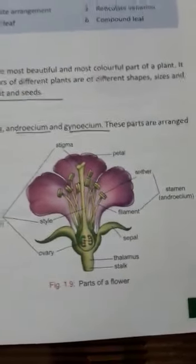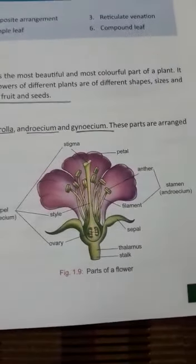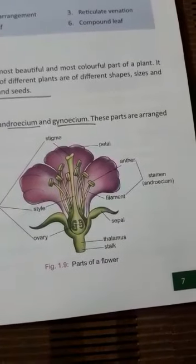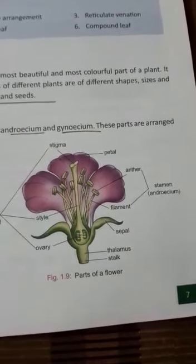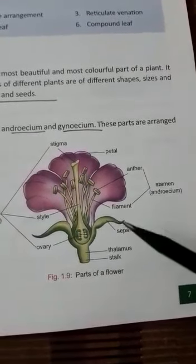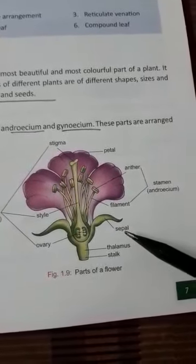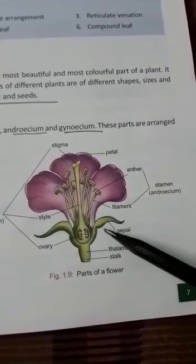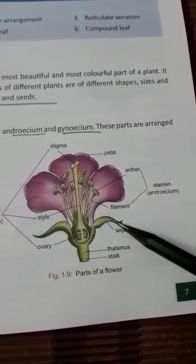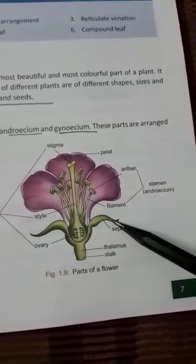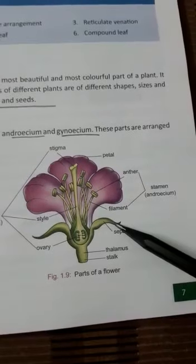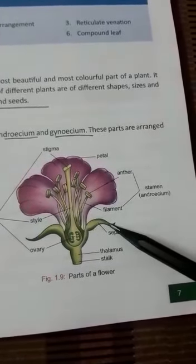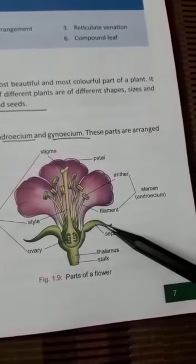The first part is calyx. As you can see in the diagram, figure 1.9, calyx is the outermost whorl and it is made up of sepals, which are green leaf-like structures. The function of the sepal is to protect the inner part of a flower during its bud stage.